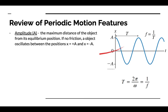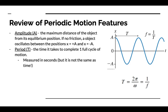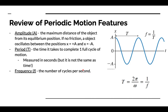A review of periodic motion features. Amplitude A is the maximum distance of the object from its equilibrium position. If no friction is present, an object oscillates between the positions X equals plus A and X equals minus A. The period is the time it takes to complete one full cycle of motion. We've completed one full motion from one crest to another crest. Measured in seconds, but it is not technically the same as time — it is a measurement of the time required to complete one full cycle. Frequency is the number of cycles completed per second, and is the reciprocal of our period. It's measured in hertz. One hertz is equal to the reciprocal of one second.